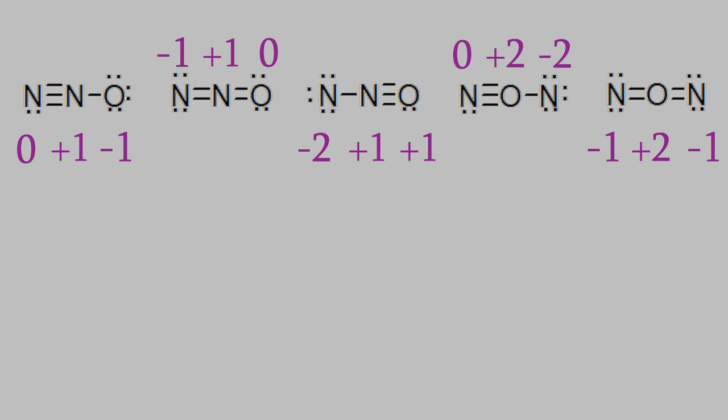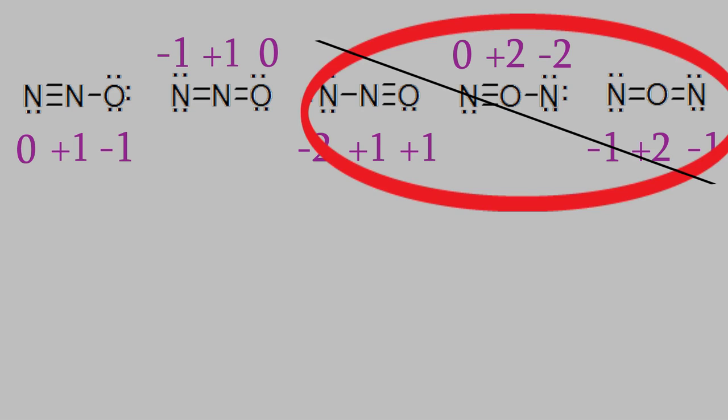So now, how to choose between them? It turns out that structures are more likely the closer all the formal charges are to zero. None of the structures we drew have a formal charge of zero for all their atoms. If there was such a structure, that would be the best choice. But we can rule out these three structures, which have atoms with formal charges of two or minus two.